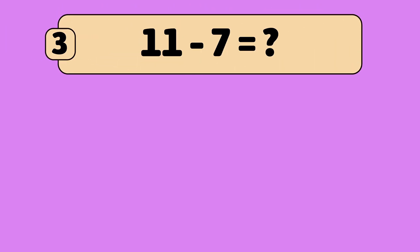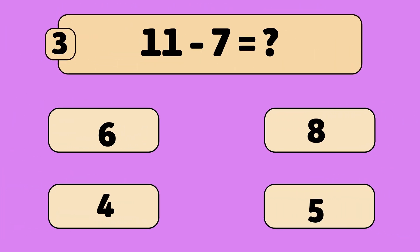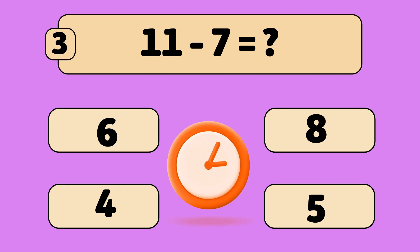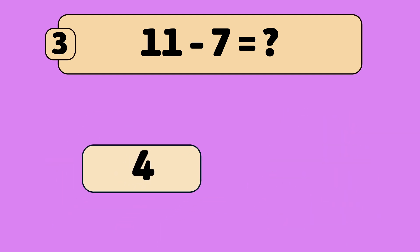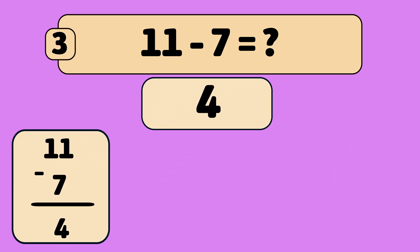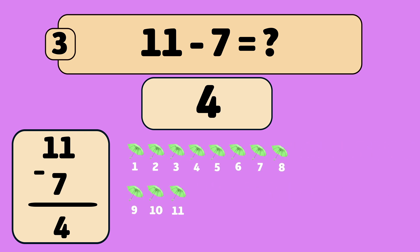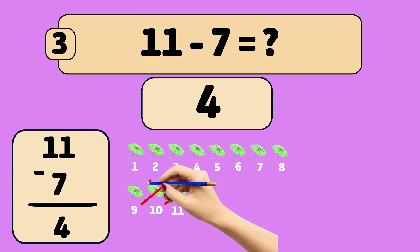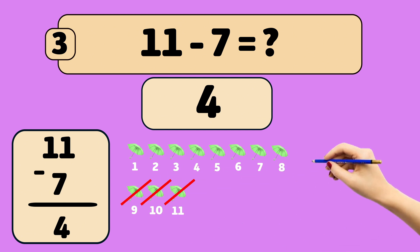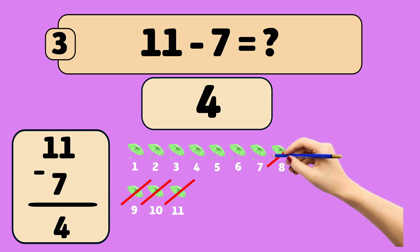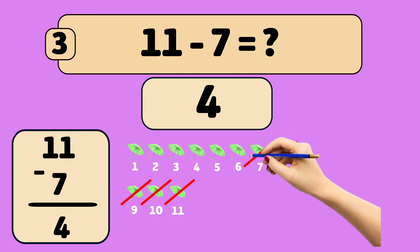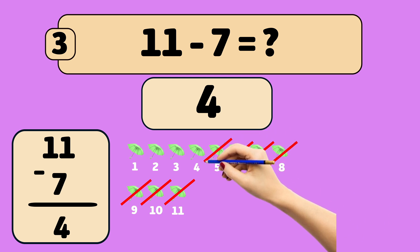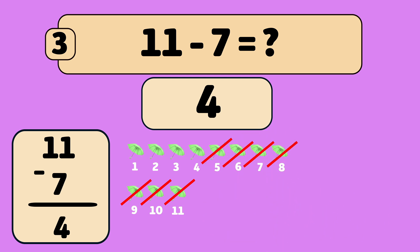What is 11 minus 7? Now we have 4 umbrellas left.